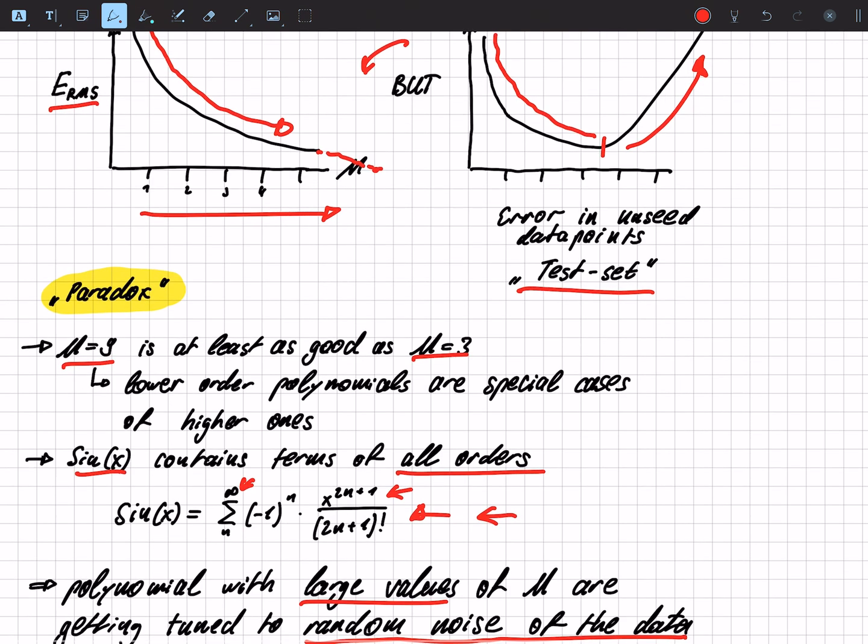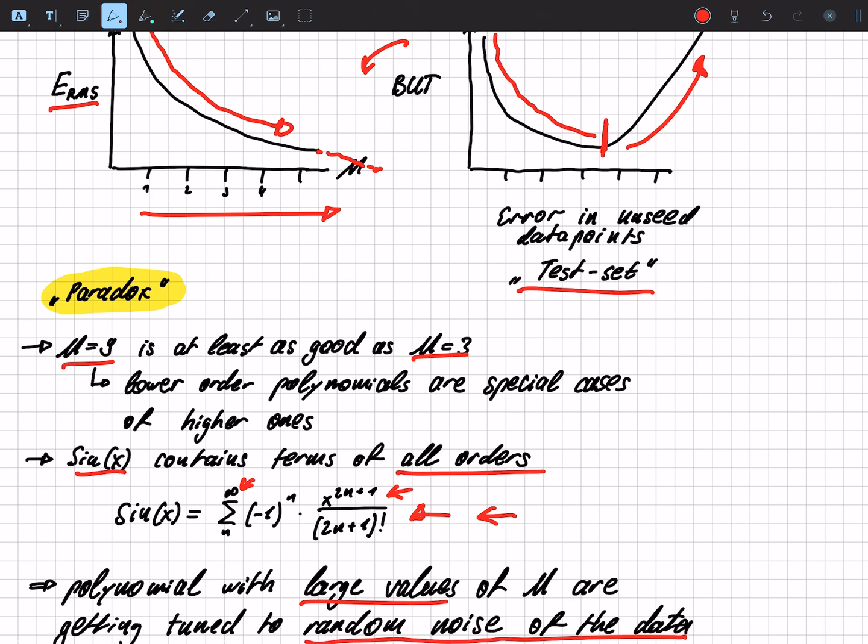So this is why we stop at a certain degree, a certain order of the polynomial to not learn the randomness in the data.